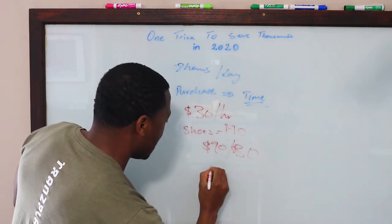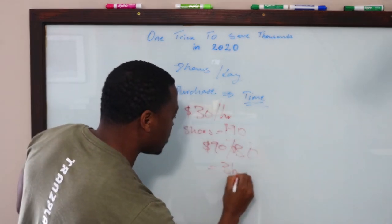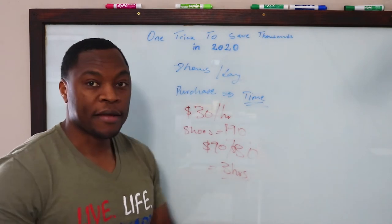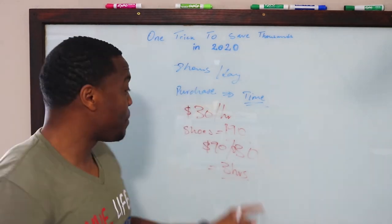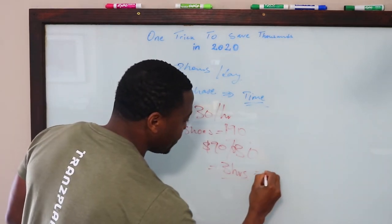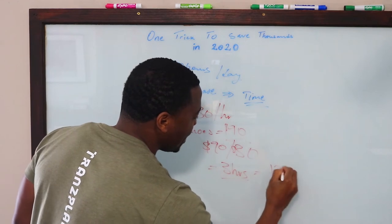So, you spend actually three hours working. Three hours working to buy one pair of shoes. That's the equivalent of about 180 minutes.